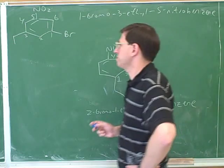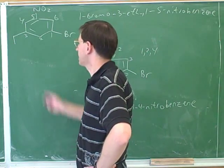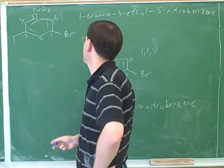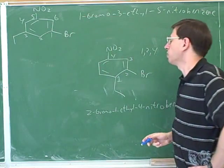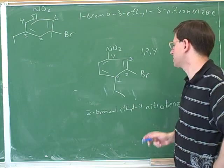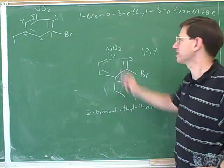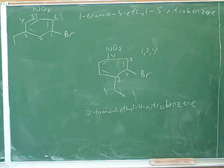However, sometimes it doesn't matter where you put the number one carbon, you always get the same set of numbers and that's the only situation where you have to use alphabetization to choose the numbering. However, you always use alphabetization just to determine what order you're going to list the prefixes in. In both of these cases, these were listed in alphabetical order. So yeah, that is a subtle nuance.